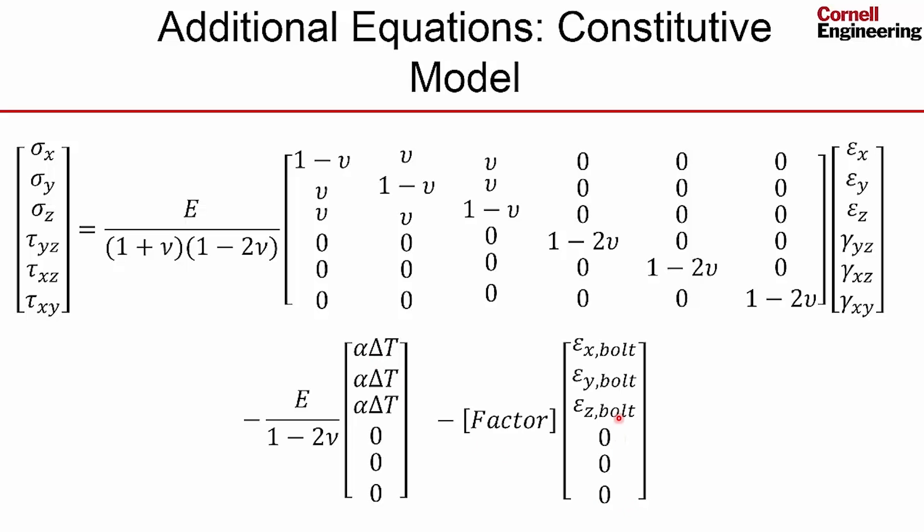And then we have an additional term here that's due to the bolt preload. And so this term will appear only over the bolt. And this accounts for the fact that when you tighten the bolt, you're shrinking it. And you create, you're putting a strain in the bolt. And that is modeled analogous to the thermal strain. Okay, so the bolt preload will modify the constitutive model.